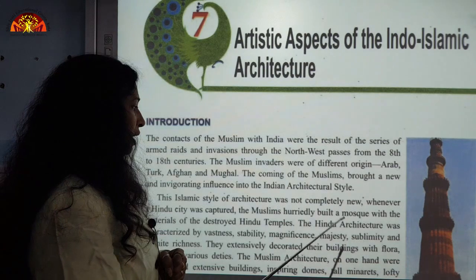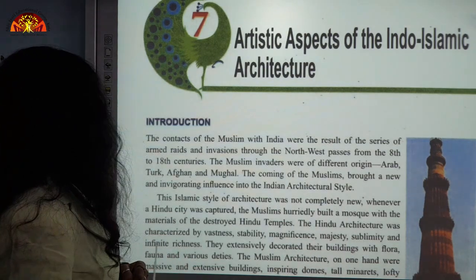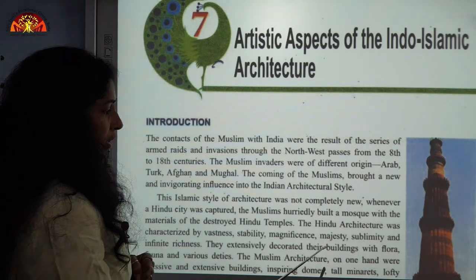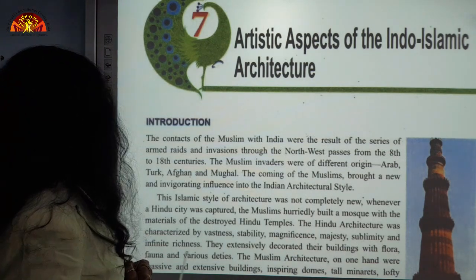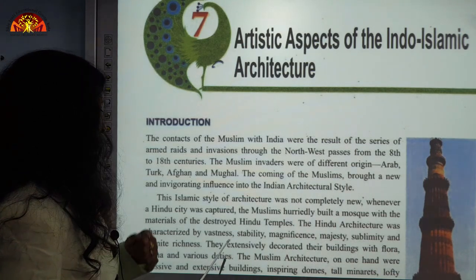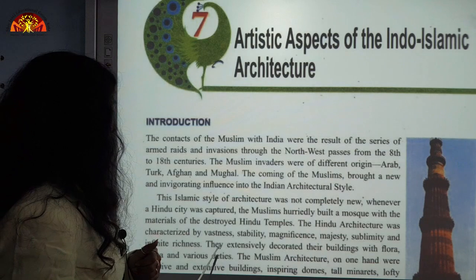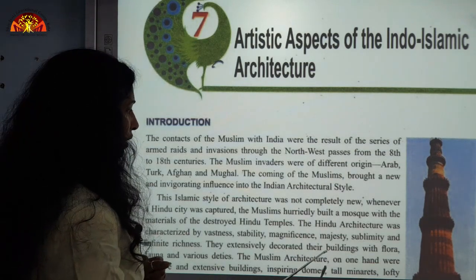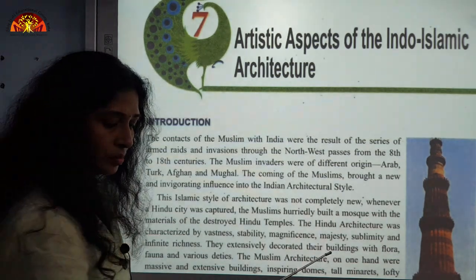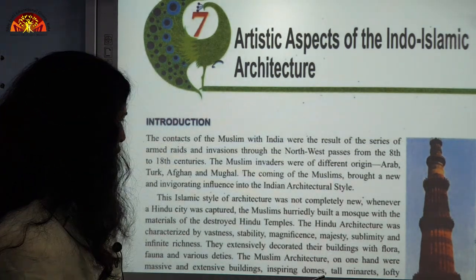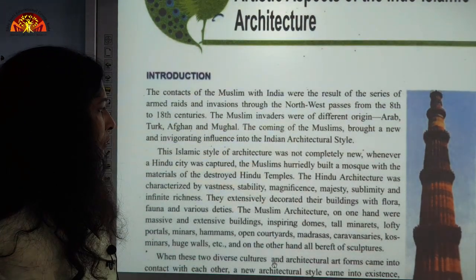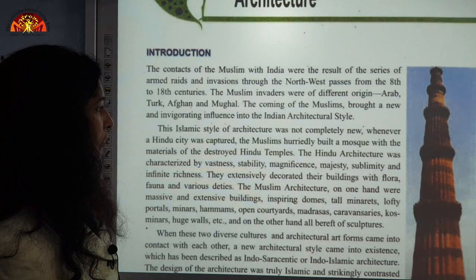The Hindu architecture was characterized by vastness, stability, magnificence, majesty, sublimity, and infinite richness. They extensively decorated their buildings with flora and fauna — that is, plants and animal imagery — in various designs.